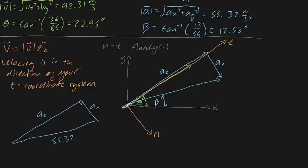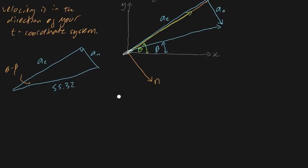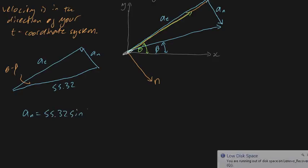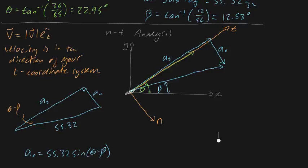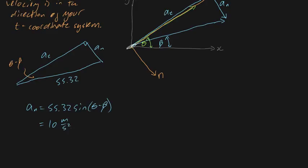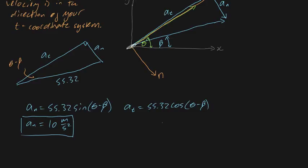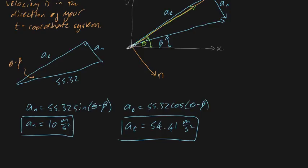We know that an equals 55.32 times sine of theta minus beta, which is 55.32 times sine of 22.95 minus 12.53. That gives approximately 10 meters per second squared. And at equals 55.32 times cosine of theta minus beta, which when plugged into the calculator equals 54.41 meters per second squared. So 10 m/s² is the normal acceleration, and 54.41 m/s² is the tangential acceleration.